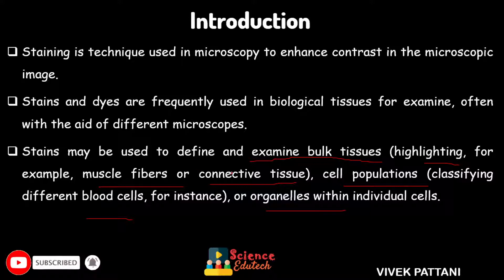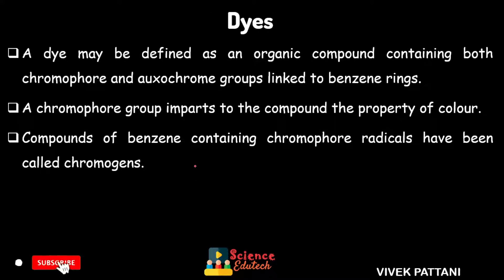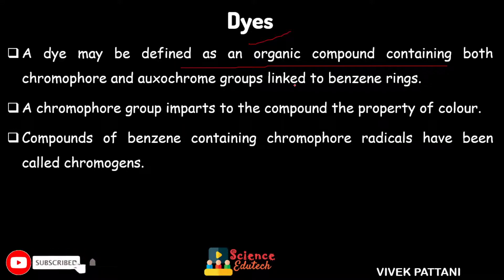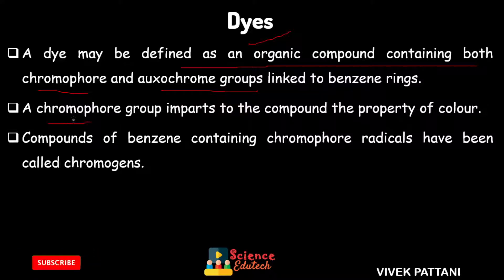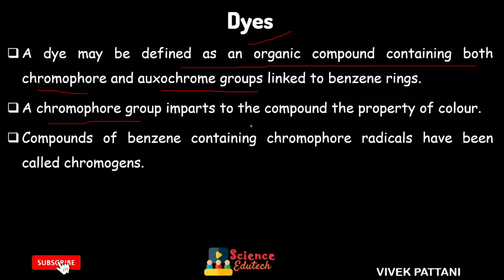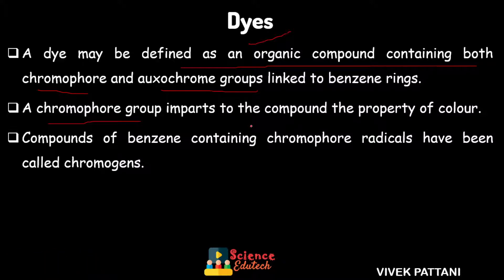Staining also helps to classify different types of blood cells — RBCs, WBCs, platelets, etc. — and to differentiate between organelles within individual cells. A dye may be defined as an organic compound containing both a chromophore and an oxochrome group, linked to benzene rings. A chromophore is a group which imparts color to the compound; each dye has a chromophore responsible for its color.